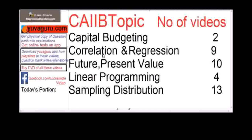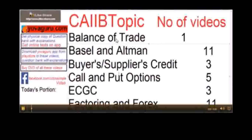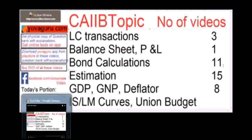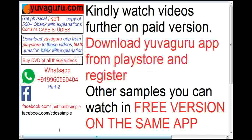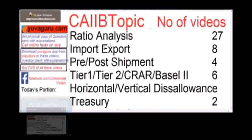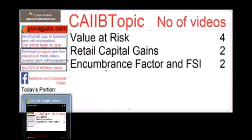For CIB, the following video topics are available: Capital Budgeting, Correlation, Future and Present Values, Linear Programming, Sampling Distribution, Balance of Trade, Ultimate Score, Buyer's Credit, Supplier's Credit, Call and Put Options, ECGC, Factoring, LC Transactions, Balance Sheets, P&L, Bond Calculations, Estimation, GDP, GNP, Deflator, IS-LM Curves, Union Budget, Keynes' Theory, Ratio Analysis, Import-Export, Pre- and Post-Shipment, Tier 1 and Tier 2 Capital, CRAR, Basel Horizontal and Vertical Disallowances, Value at Risk, Retail Capital Gains, Encumbrances and Excumbrances.